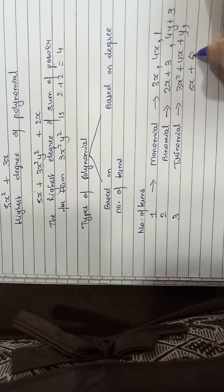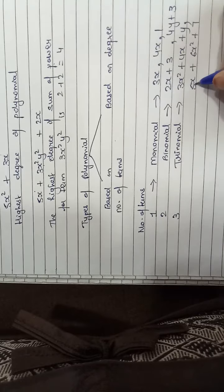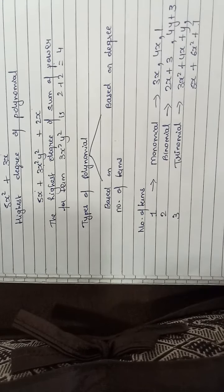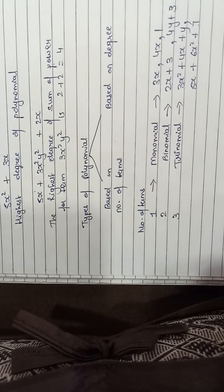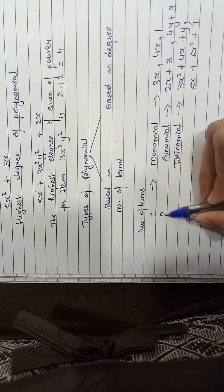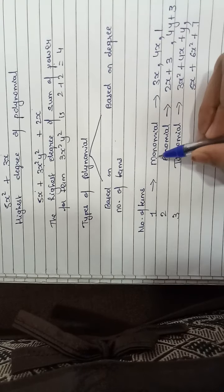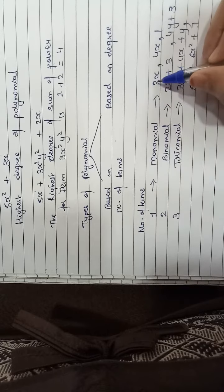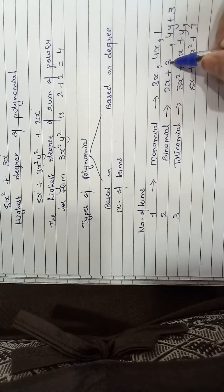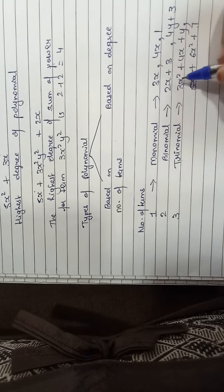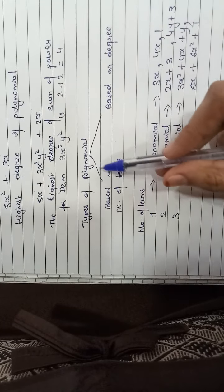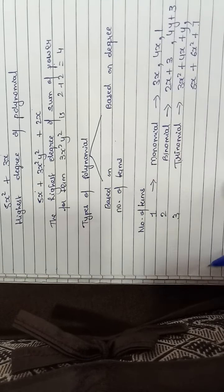One more example of trinomial: 5x plus 6x square plus 7 — again 3 terms, 1, 2, 3, so this is a trinomial. From the words themselves: mono means 1, bi means 2, tri means 3. So monomial has 1 term, binomial has 2 terms, and trinomial has 3 terms.